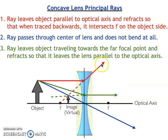Our three principal rays are diverging in this case, which of course means we need to trace those rays backwards. That's what we do here, and the three rays intersect at the location of our virtual image.